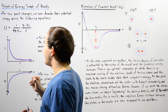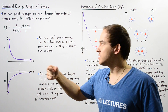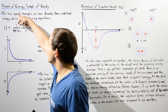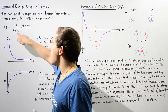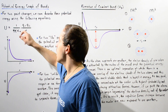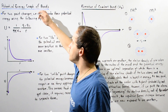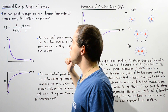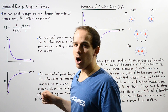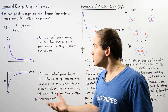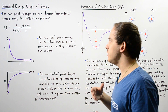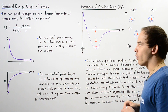The potential energy as a result of two stationary point charges is equal to 1 divided by 4π multiplied by epsilon naught — a constant multiplied by Q1 times Q2 divided by R, where Q1 and Q2 are their charges and R is the separation distance between those two point charges.